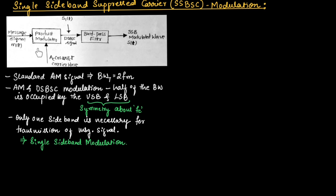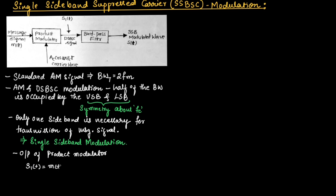This figure shows the block diagram to generate the single sideband modulated wave. It consists of a product modulator and a band pass filter. The output of the product modulator is the multiplication of the message signal with a carrier signal AC cos(2π FC t). So the output of the product modulator is given as S1(t) = M(t) × AC cos(2π FC t), which is a DSBSC signal.